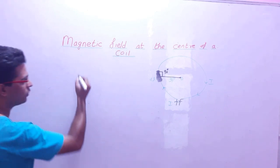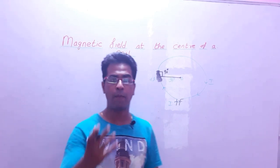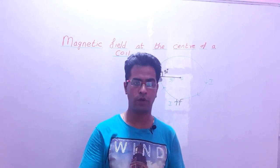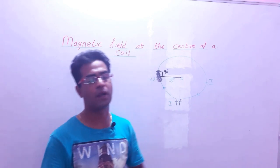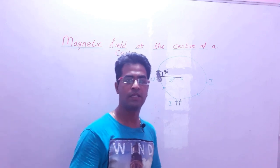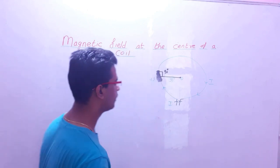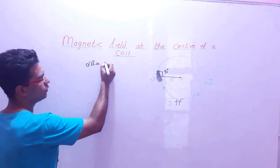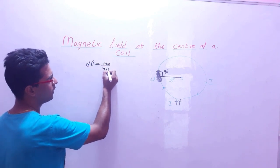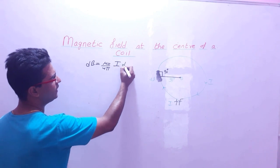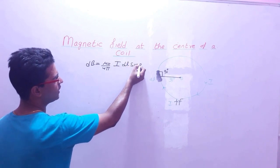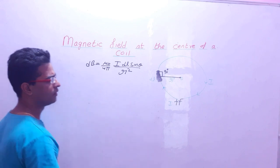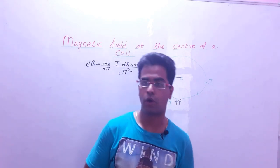What is Biot-Savart Law? पिछली वीडियो के अंदर आपने Biot-Savart Law study किया था। इसकी application का first part है — circular coil के center पे कितना magnetic field होगा। Formula: dB = μ₀/4π · (I·dl·sinθ) / r². This is what Biot-Savart Law states।